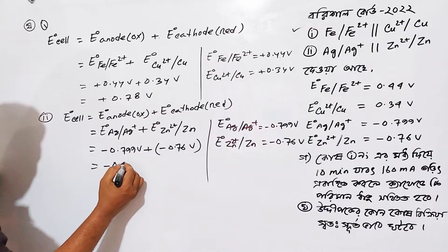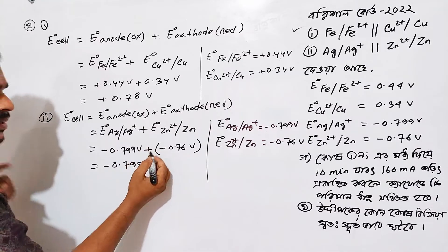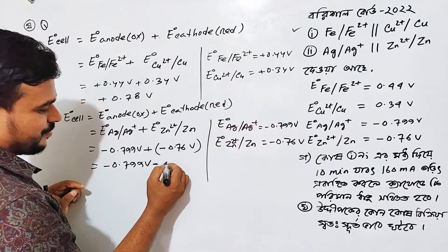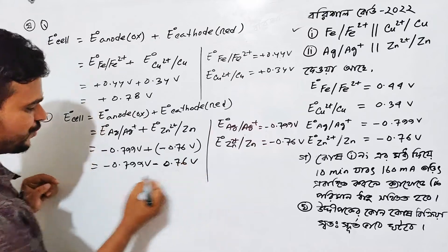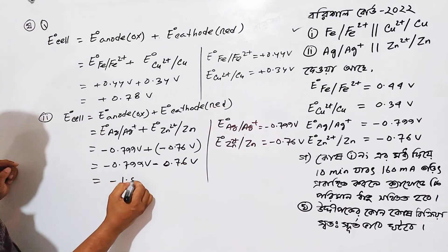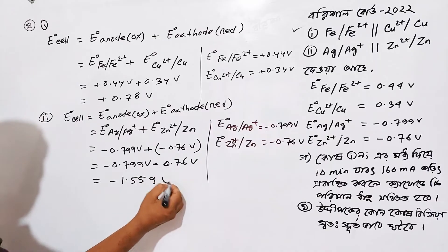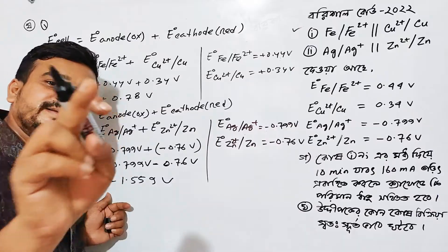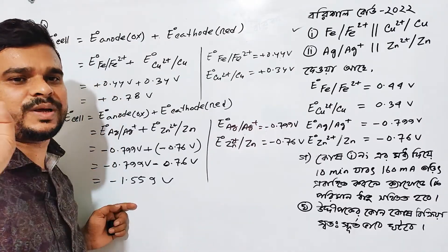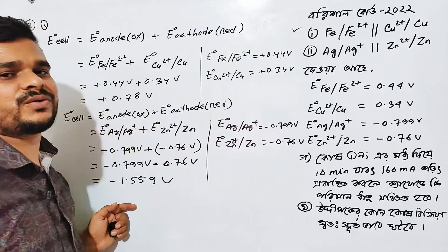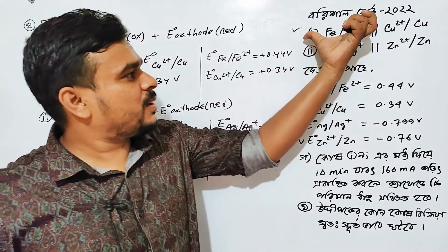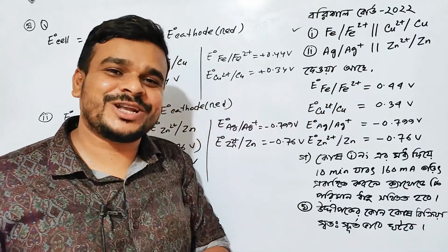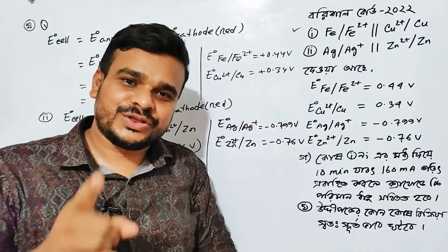It is minus 0.799 volt, E plus or minus — it is minus minus 0.76 volt. So if you look at it, it's minus 0.559 volt. So this is not the same, it's not the same. Comment box — Johnny, other one, don't know what I gave.